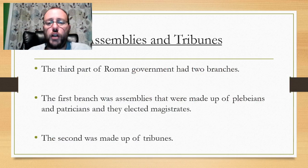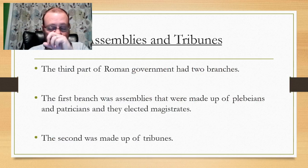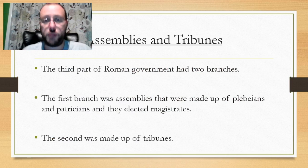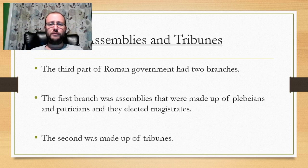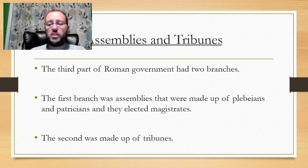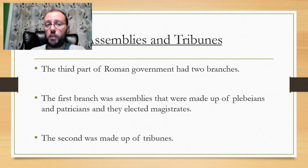The third part of the Roman government had two branches. The first was assemblies made up of Plebeians and Patricians that elected magistrates. The second was made up of the tribunes. This was partly an attempt to silence the Plebeians — giving them a voice so they could be quiet about the uprisings. They were given a little bit of power and a little bit of votes.